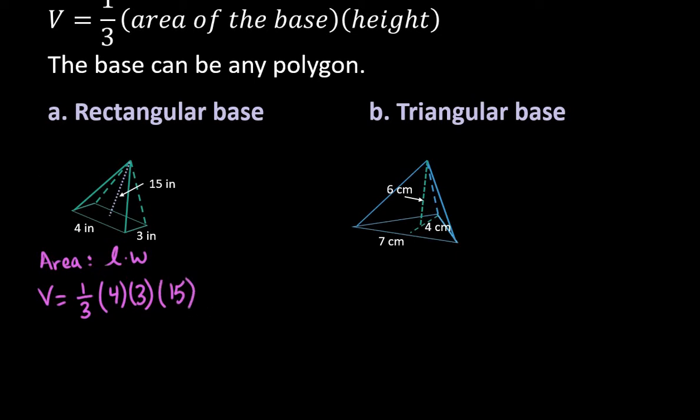So with this, you can always plug it in a calculator if you need to, but we know that one-third of three is just one. Those would cancel each other out. So I would be left with four times 15, which ends up giving me 60. And our units, because we have inches times inches times inches, would end up being 60 cubic inches.